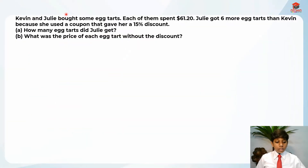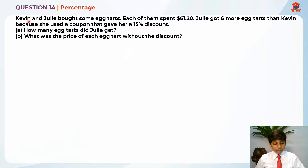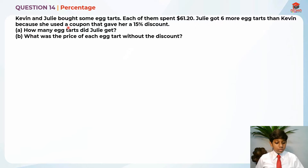This over here is question 14 and this question is testing us on percentage. This question was a famous egg tart question in the PSLE 2019. So let's read the question for Part A first. Kevin and Julie bought some egg tarts. Each of them spent $61.20. Julie got 6 more egg tarts than Kevin because she used a coupon that gave her a 15% discount. Part A: how many egg tarts did Julie get?